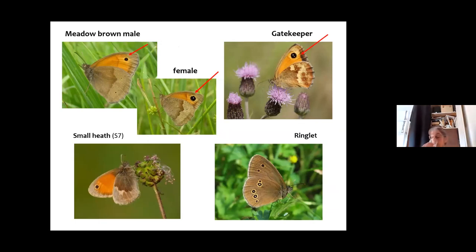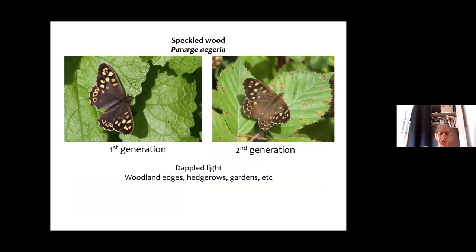Looking at undersides again: the eye spots can help you tell the difference. The undersides of the gatekeeper are quite strongly marked. Small heath almost always shows its upper wing, which is a good way of telling it from the more nondescript meadow browns. The speckled wood is another very common species — I've shown first and second generation. A number of species look a bit different in different generations, but the speckled wood is unmistakable in both: a dark butterfly with pale patches, sometimes very whitish, sometimes orangey. They like dappled light, at the edges of hedgerows, woodlands, and shrubs.